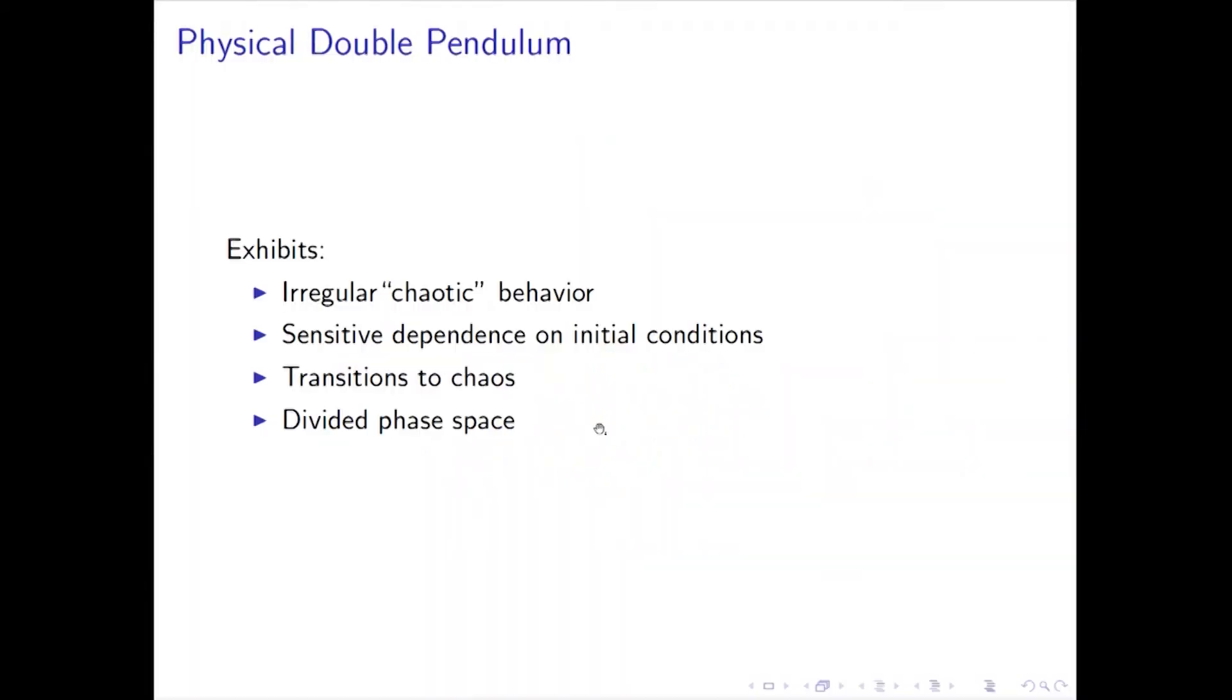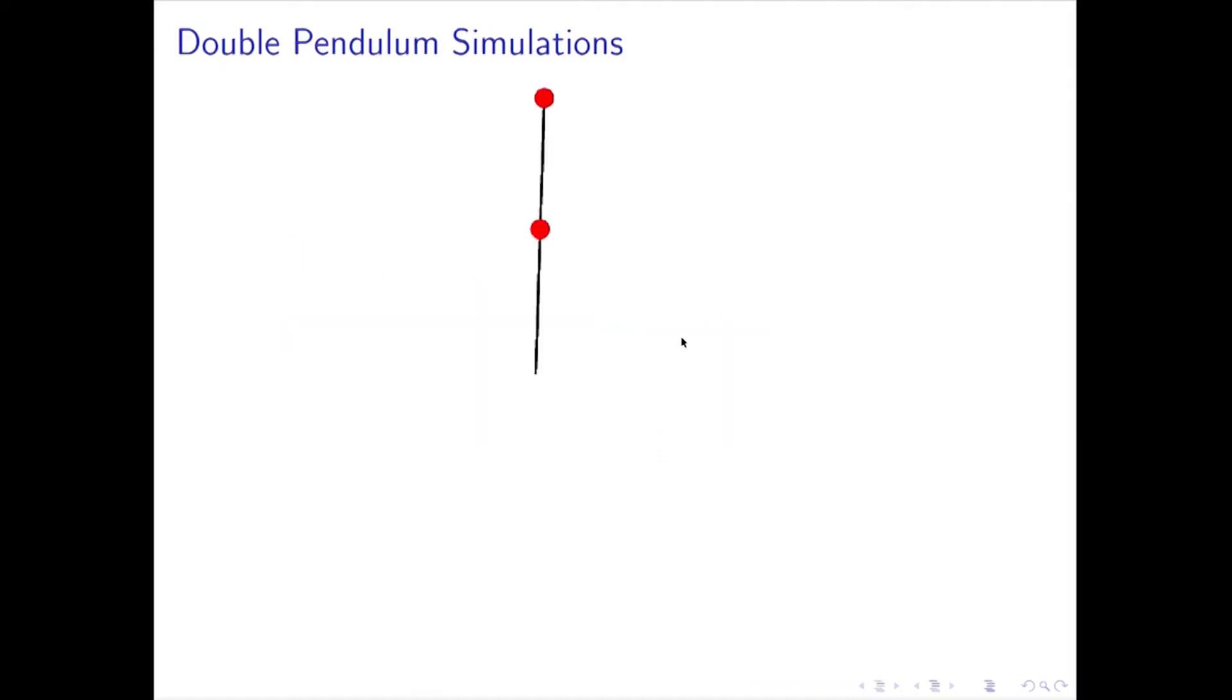Now, I couldn't demonstrate sensitive dependence on initial conditions, but I can do it with a simulation. So here's a double pendulum simulation. These are each one meter length long, and there are two pendula superimposed on each other. And one differs from the other by one angstrom, the width of an atom. And so you can see how quickly the width of an atom makes a difference in the motion of the double pendulum.